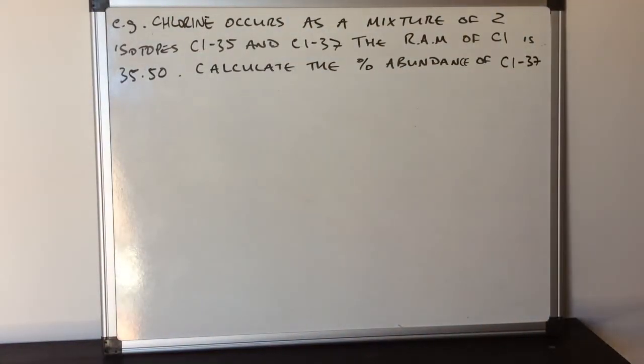Here's one for you to try. Chlorine occurs as a mixture of two isotopes, chlorine-35 and chlorine-37. The relative atomic mass of chlorine is 35.50. Calculate the percentage abundance of the chlorine-37 isotope. If you want to have a go, pause the video and then play and I'll go through the answer.